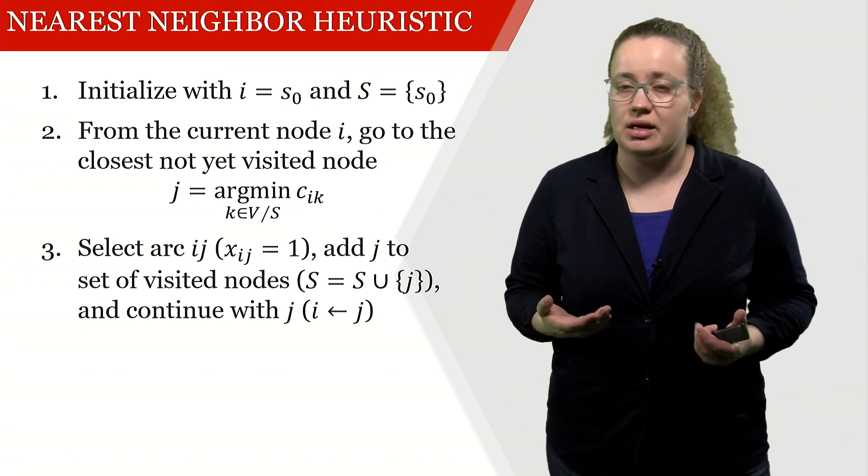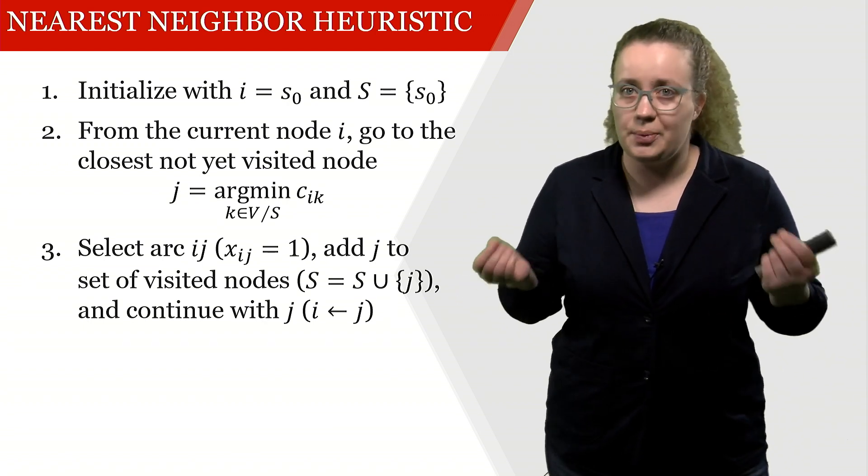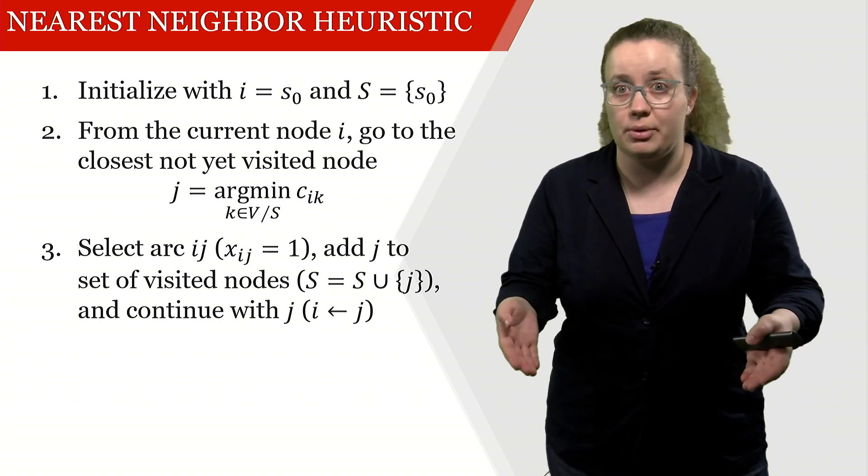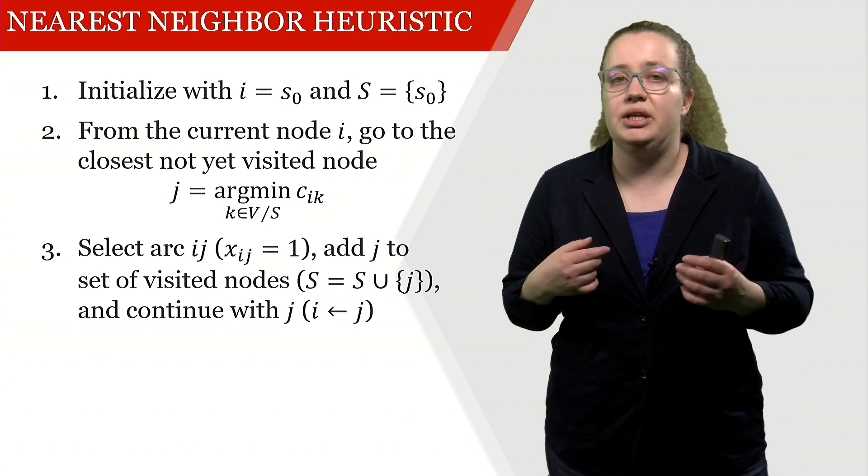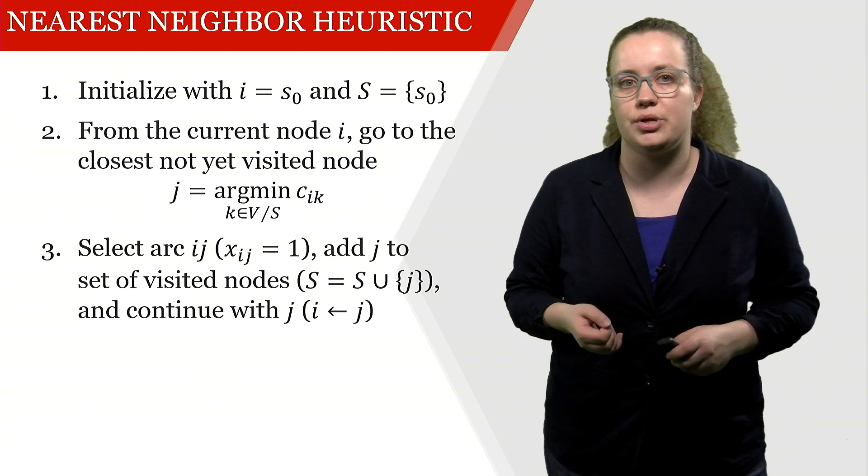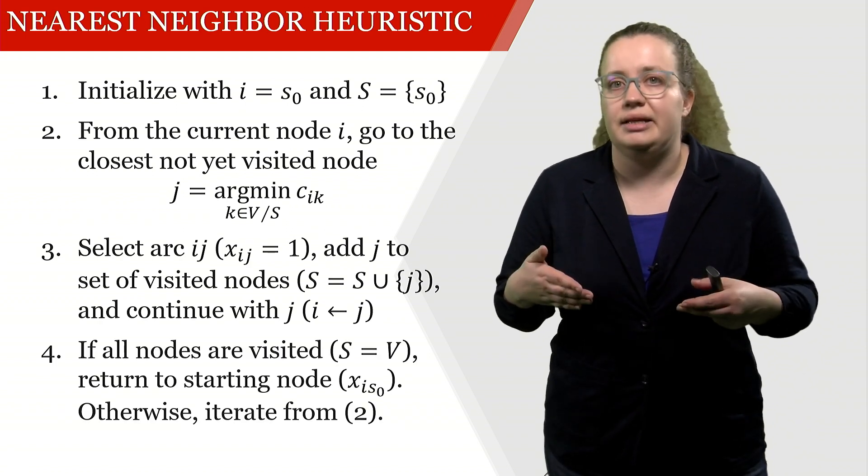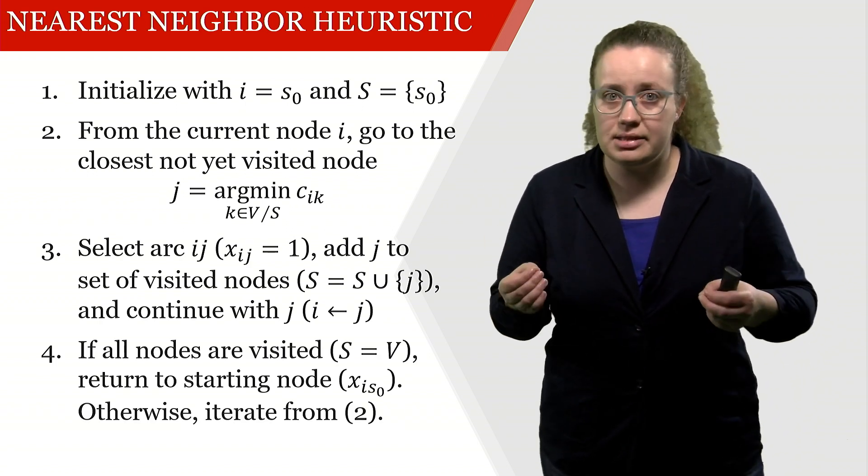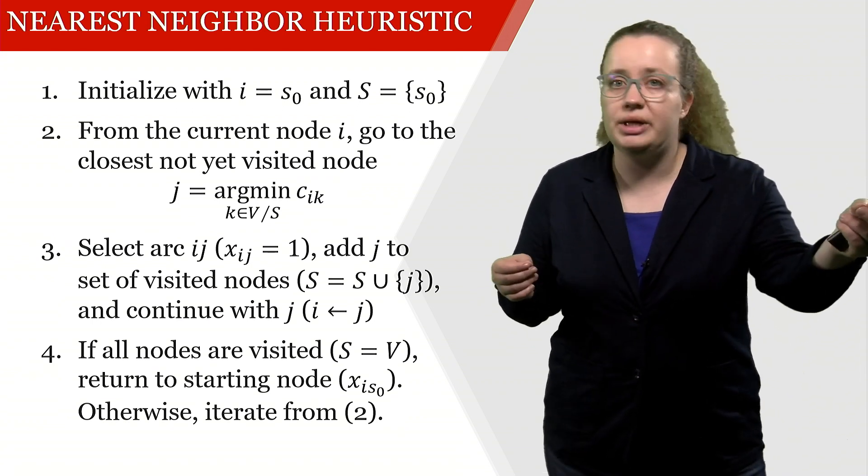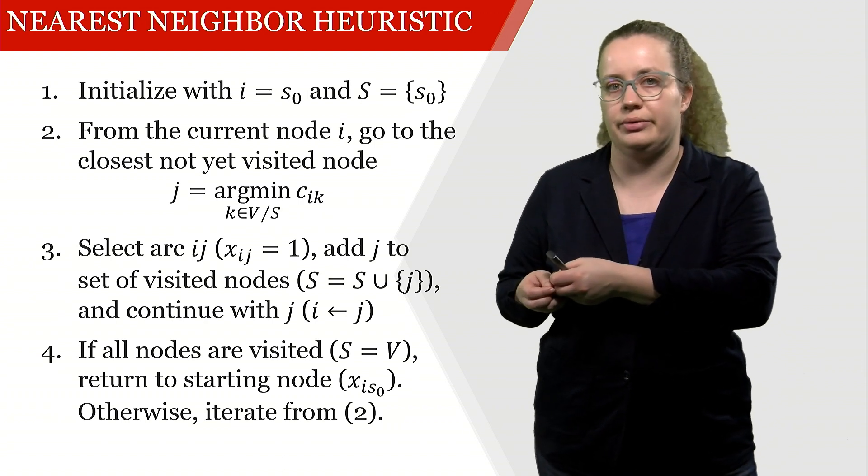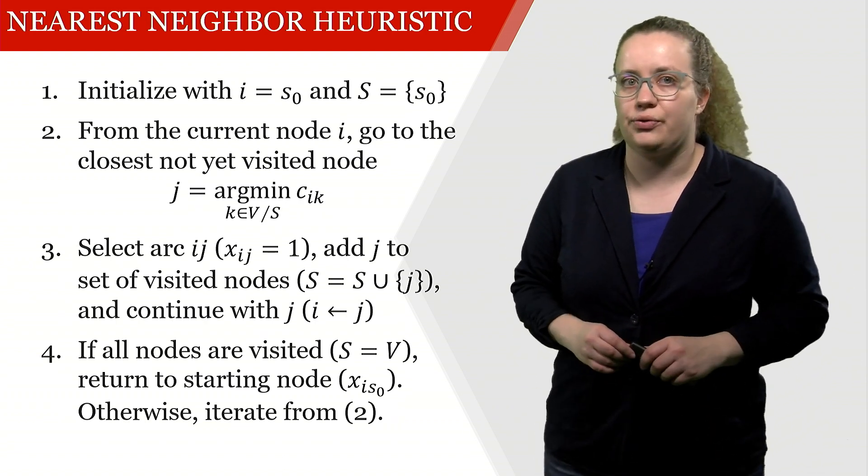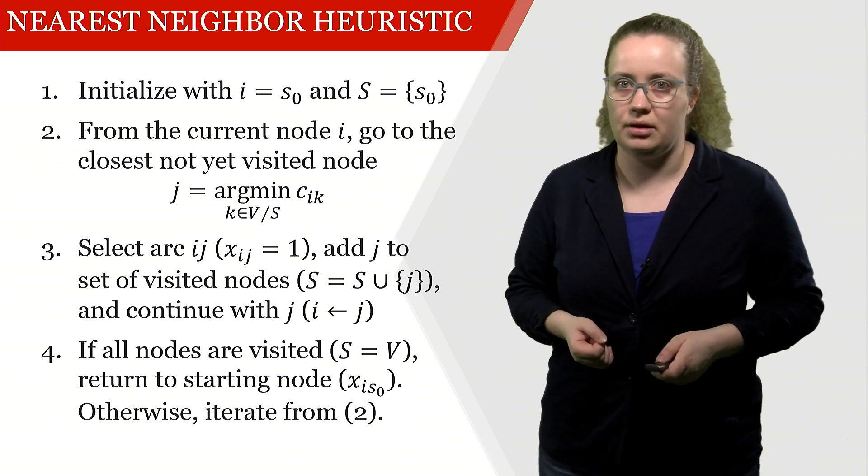Then I'm selecting this arc from i to j. I'm saying this is now part of the solution. I'm adding j to the set of visited nodes because now I'm already here, and I'm continuing with j. From j, I'm now looking for the closest node. This is exactly what is happening unless we already are at all nodes. As soon as we visited all nodes, we're just returning to our starting node. Otherwise, we iterate from the second step onwards until we visited all nodes.